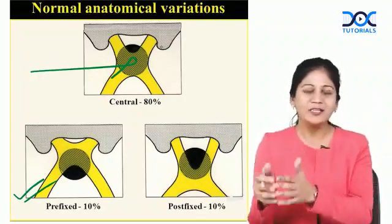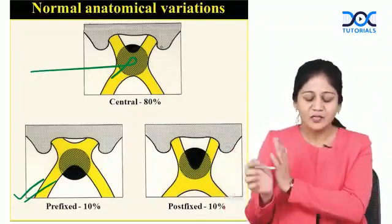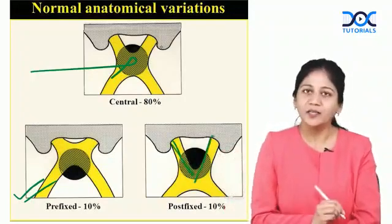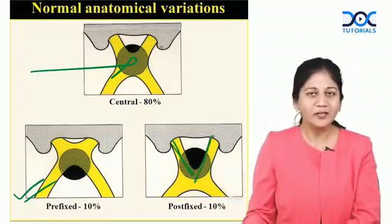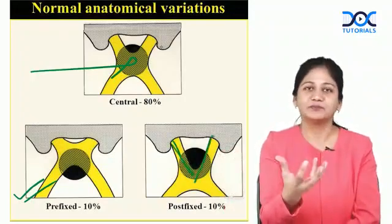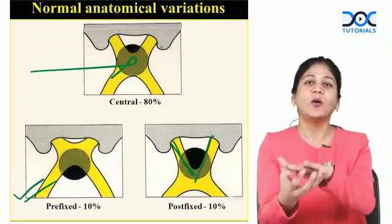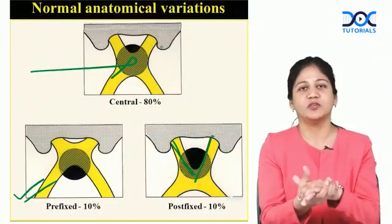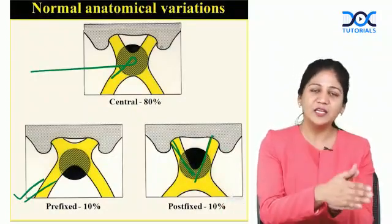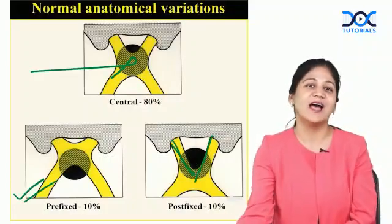What if your chiasma is post-fixed? That means it is slightly posteriorly located. If a pituitary tumor comes up in this case, it is going to compress your optic nerve first. That is the difference between a pre-fixed and post-fixed chiasma — a key distinction you must know.